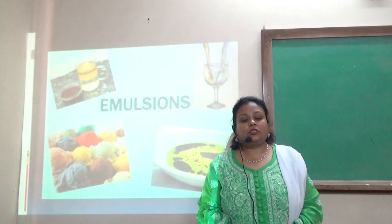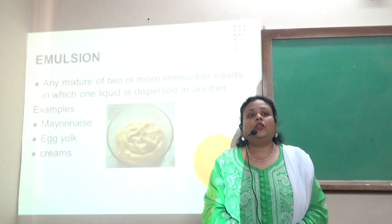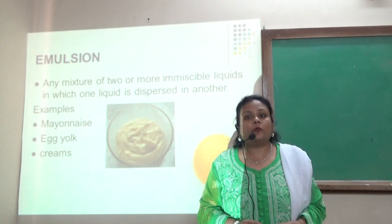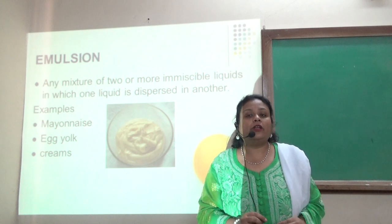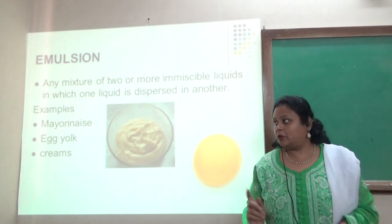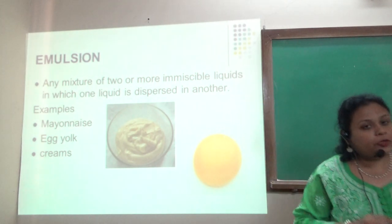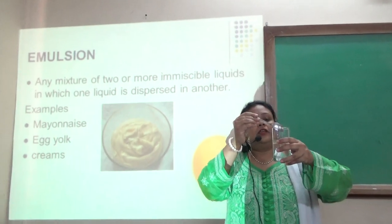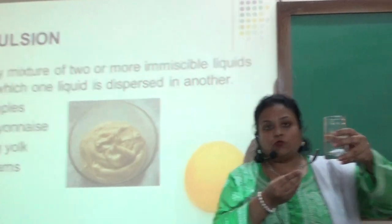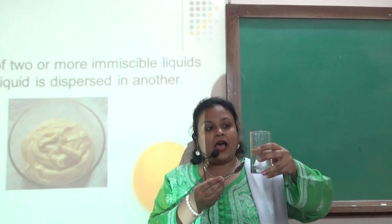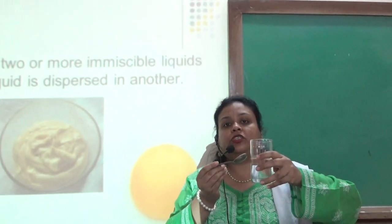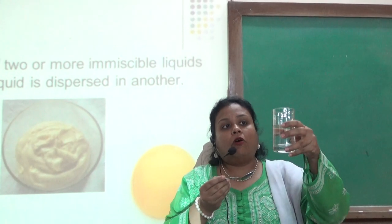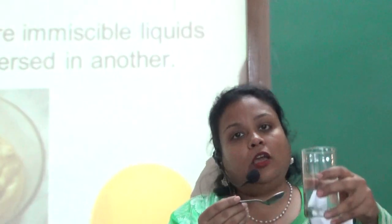We are talking about emulsions. It is a mixture of two immiscible liquids where one liquid is dispersed over the other liquid. There are two liquids: water, which is the continuous phase, and oil droplets, which is the dispersed phase. You find oil dispersed over the water.